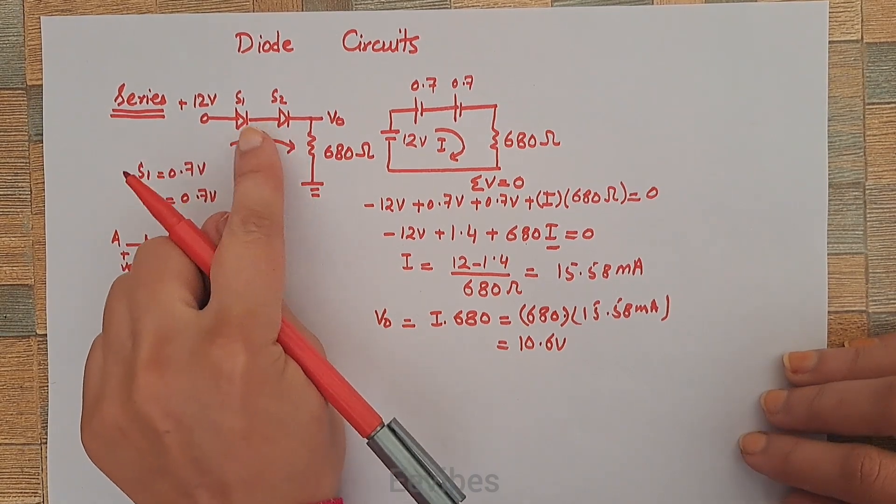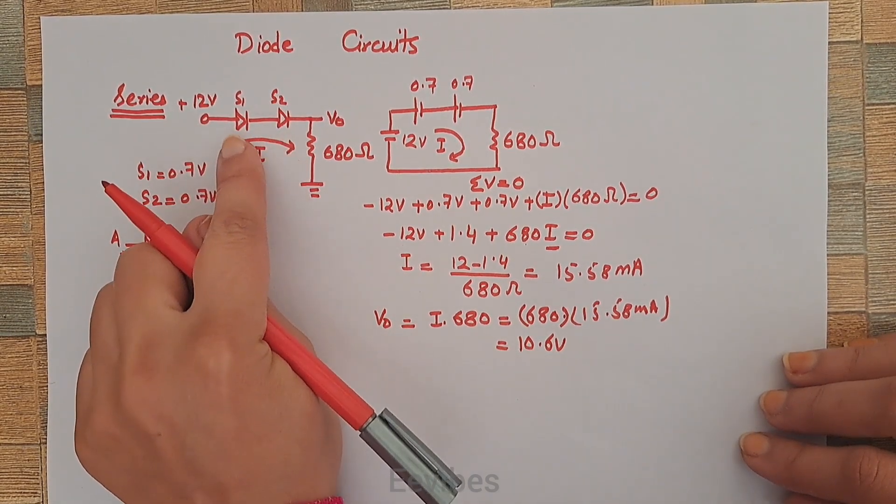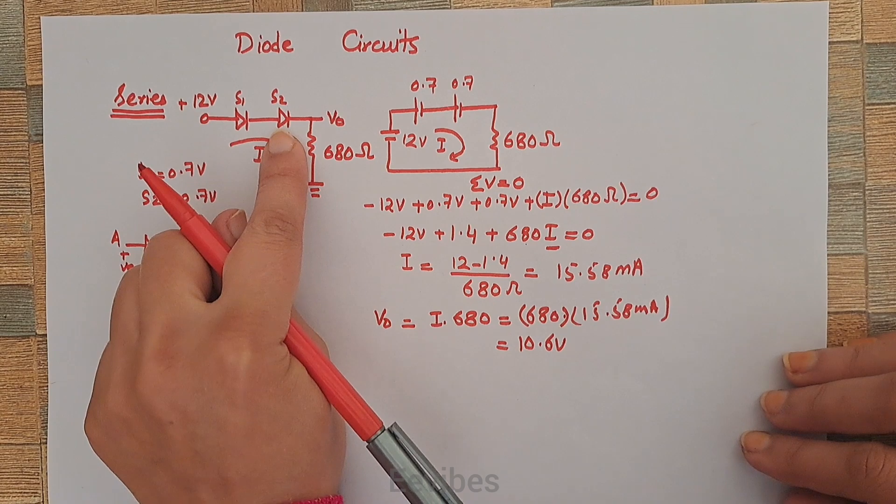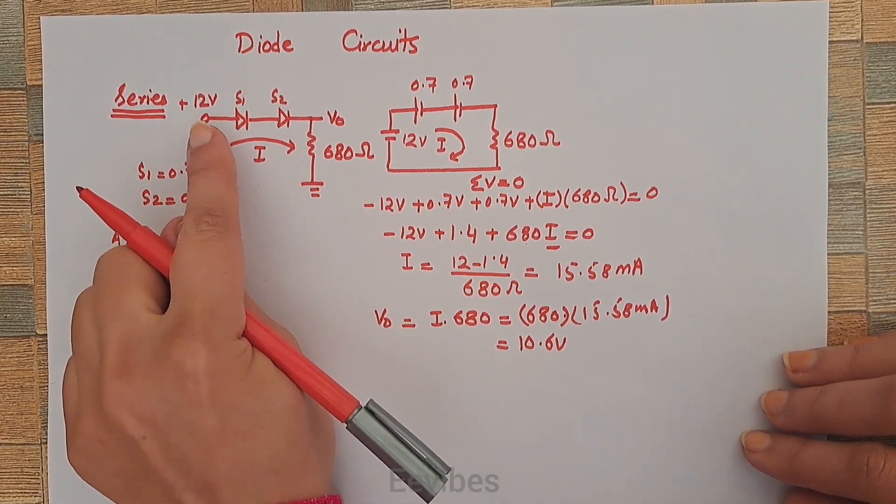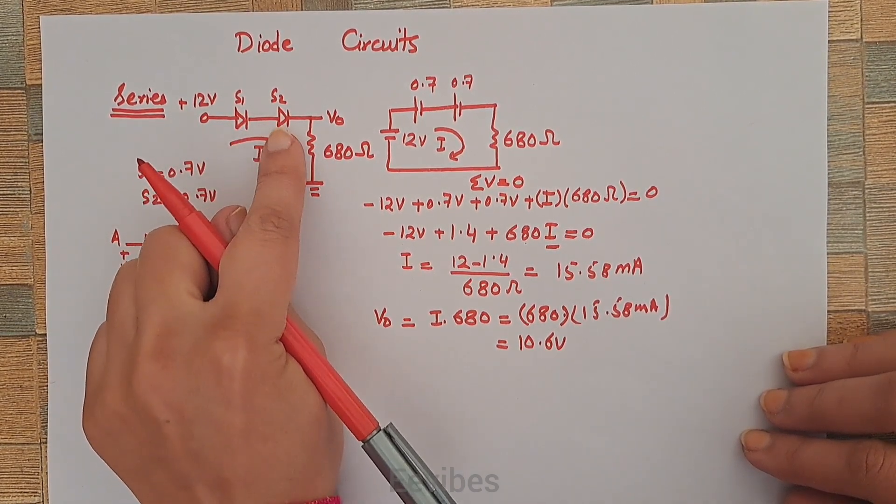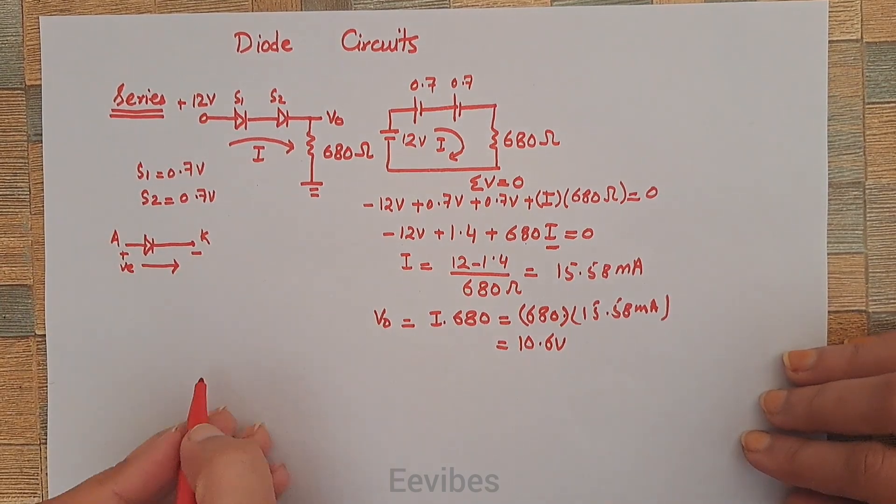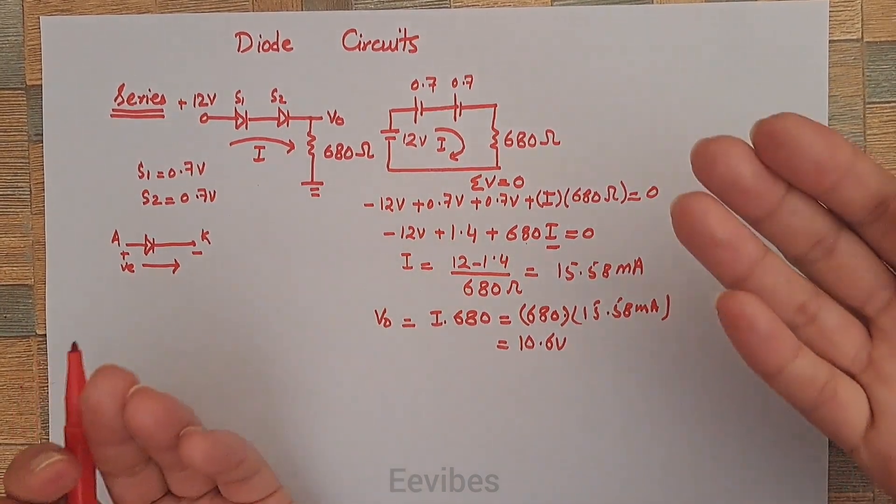Here you can clearly see that when two diodes are connected like that, they both contribute to conduction. They both will be forward biased because positive current is entering at the anode. Now what happens if we reverse the direction of these two diodes?